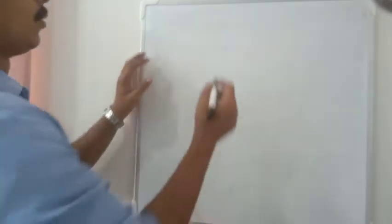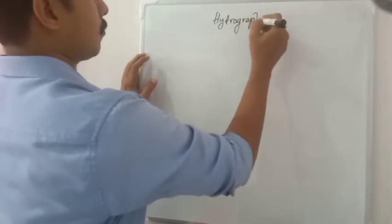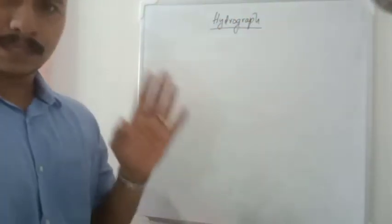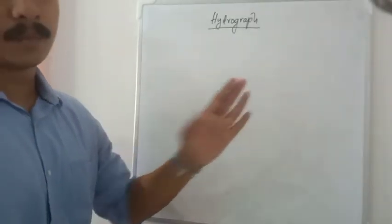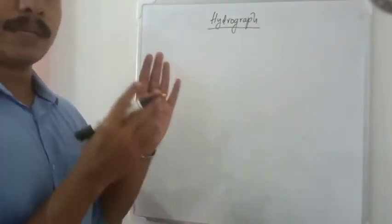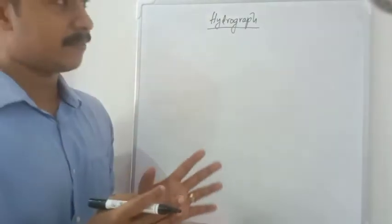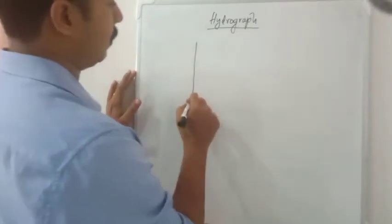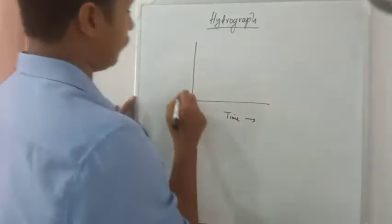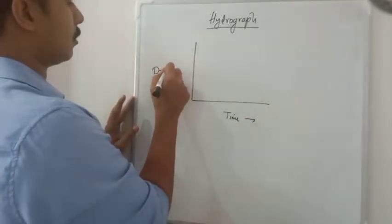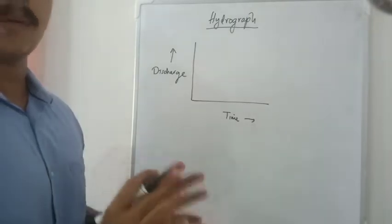Today our topic is Hydrograph. This is the most important topic in your second module, Water Resource Engineering. This is the major portion of the hydrograph — infiltration methods, runoff definitions, etc. So what is a hydrograph? A hydrograph is just a simple graph where the x-axis is time and the y-axis is discharge. It is a discharge vs time graph.